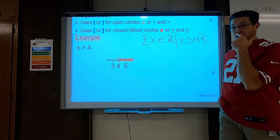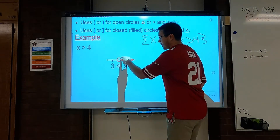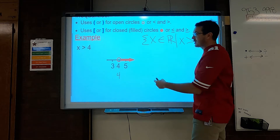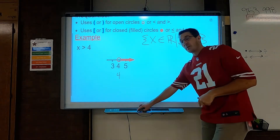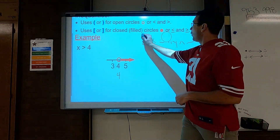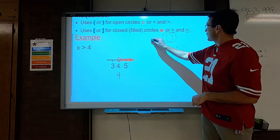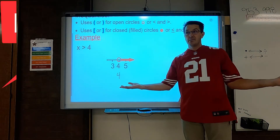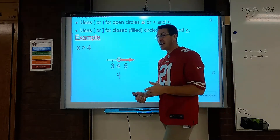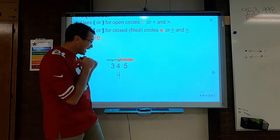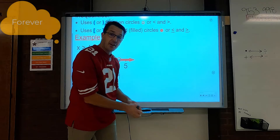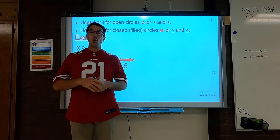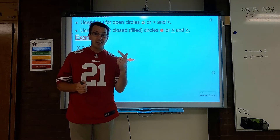So what mathematicians did is they said, you know what, I'm starting at 4, and it goes to the right forever. Well, when something goes to the right forever, what do we call that? What happens if something goes forever and never ends? We call it... Infinity! Infinity is the concept of the idea that something goes on forever and never ends. It's the reason why we don't have the world's biggest number. Because no matter what number you can think of, I can think of one bigger.